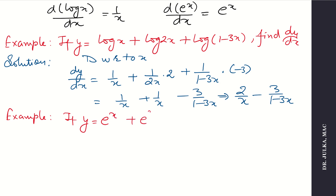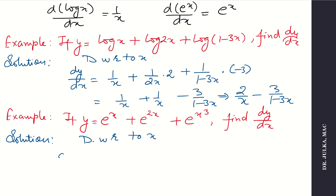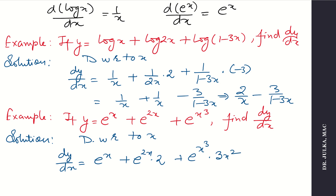Next example: if y equals e to the power x plus e raised to power 2x plus e raised to power x cube, find dy by dx. Differentiating with respect to x: derivative of e to power x is e to power x. Derivative of e to power 2x is e to power 2x into 2, since 2 is the derivative of 2x. Derivative of e to power x cube is e to power x cube multiplied by 3x square, since derivative of x cube is 3x square. So the answer is e to power x plus 2 e to power 2x plus 3x square e to power x cube.